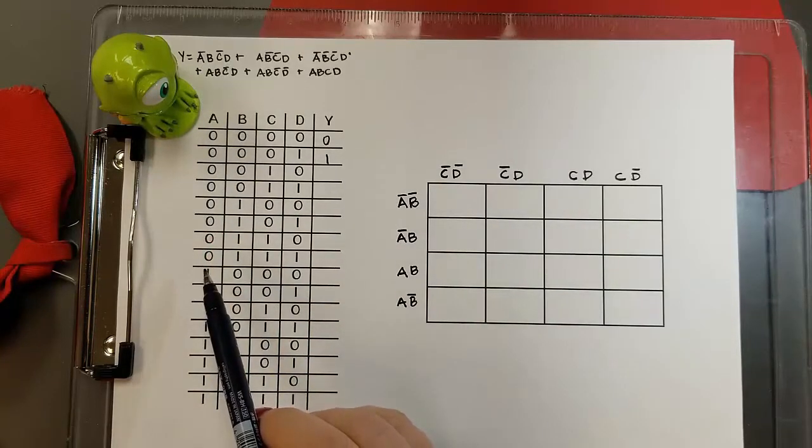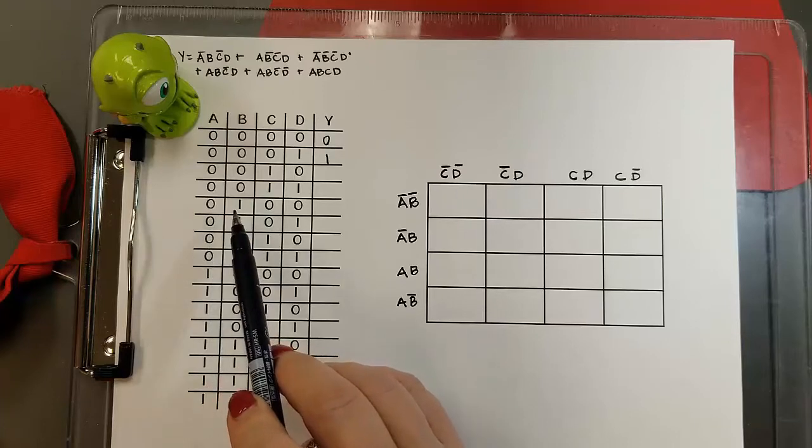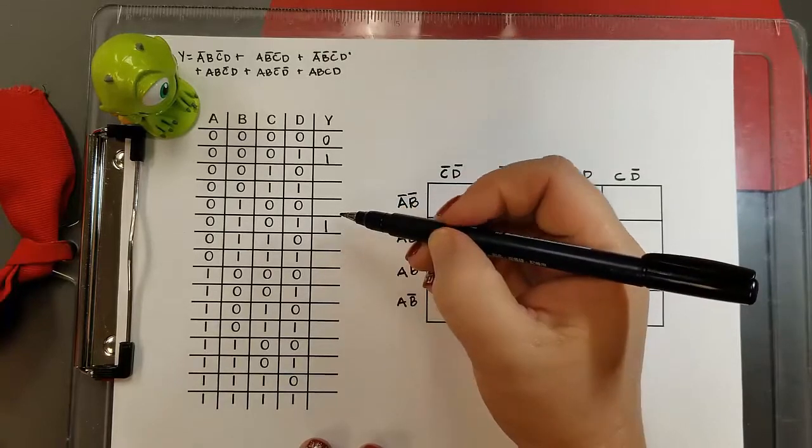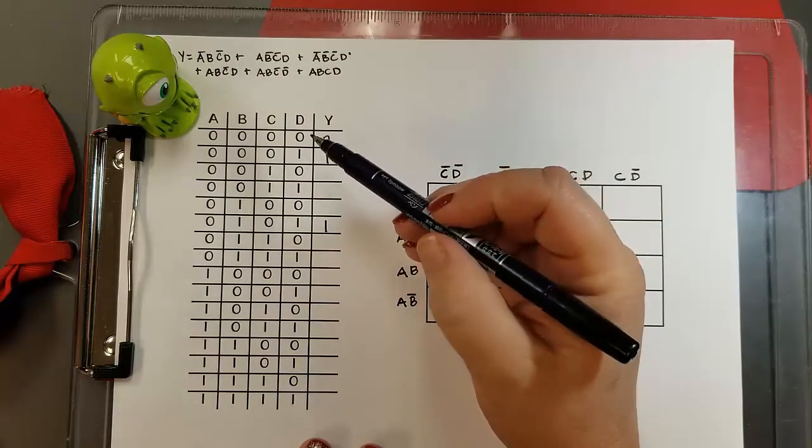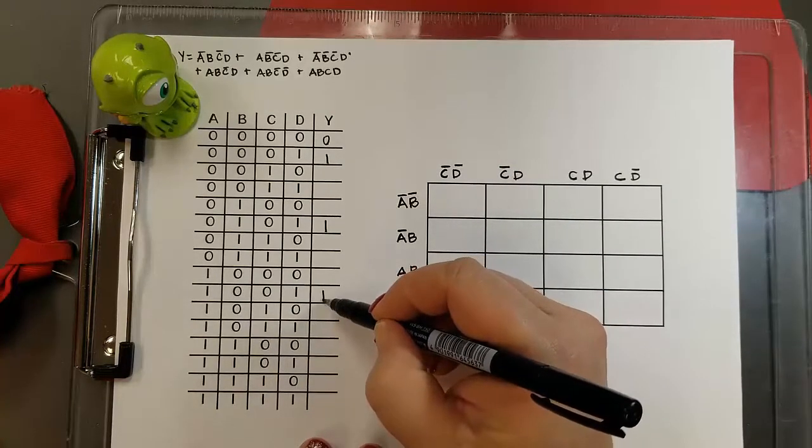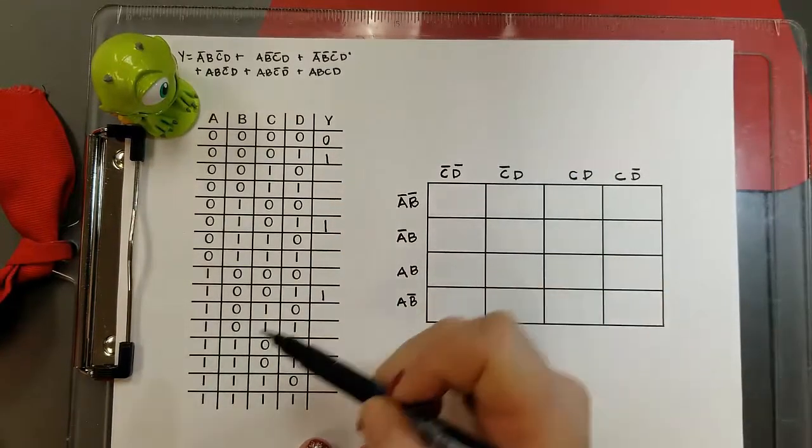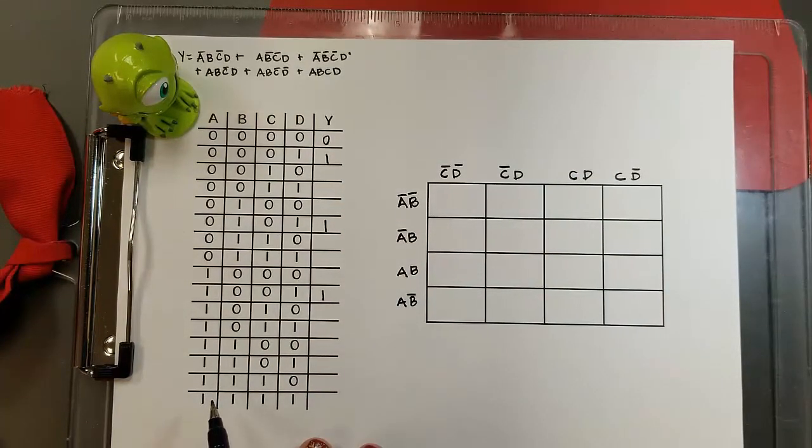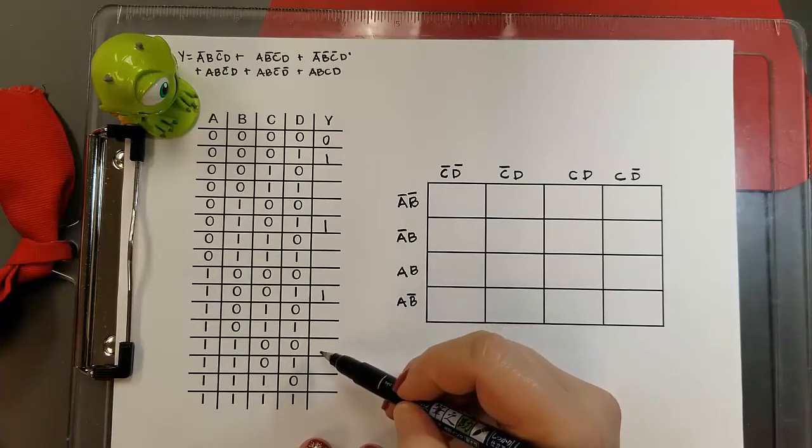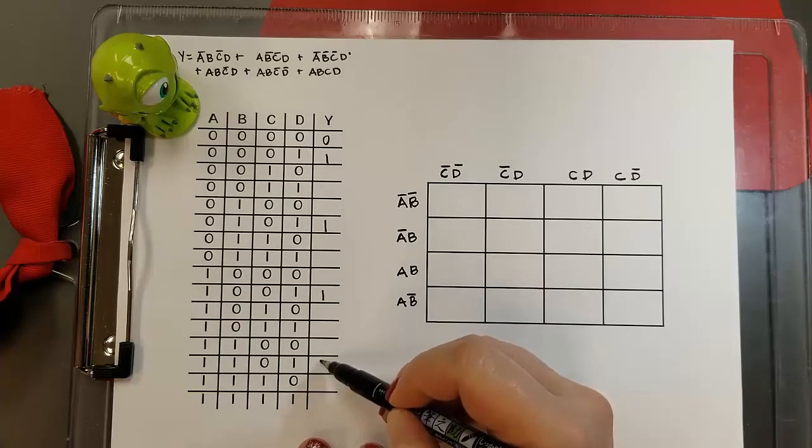Now I'm going to find not A B not C D. So that'll be A equals zero, B equals one, C equals zero, D equals one. I'm going to go through and place a one in the output column for every term from my expression. Once I've entered all the ones I can go back in and enter zeros in all the rest of the places in the truth table.